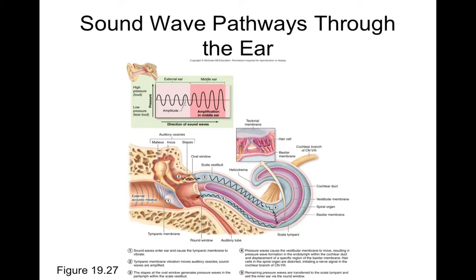The cochlear nuclei connect to the superior olivary nuclei, which are involved with sound localization, as well as the inferior colliculi of the midbrain, which are involved with auditory reflexes. Some axons also go to the medial geniculate nucleus of the thalamus, which then transmits sound information to the temporal lobe where you become conscious of that sound. Auditory information travels through the auditory branch of the vestibulocochlear nerve back towards the cochlear nucleus.